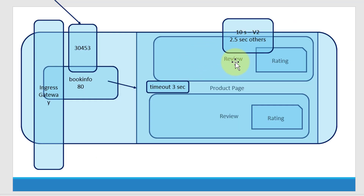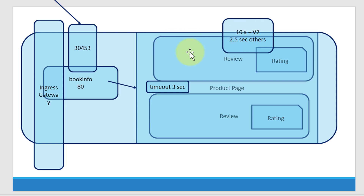The default timeout for reviews is 10 seconds and 2.5 seconds for other subsets. That means the reviews microservice can wait up to 10 seconds for the version 2 subset and 2.5 seconds for other subsets. Now as part of the virtual service we are routing all the traffic to version 2, so the reviews microservice will be waiting for 10 seconds to get the response from all other microservices that it is calling.